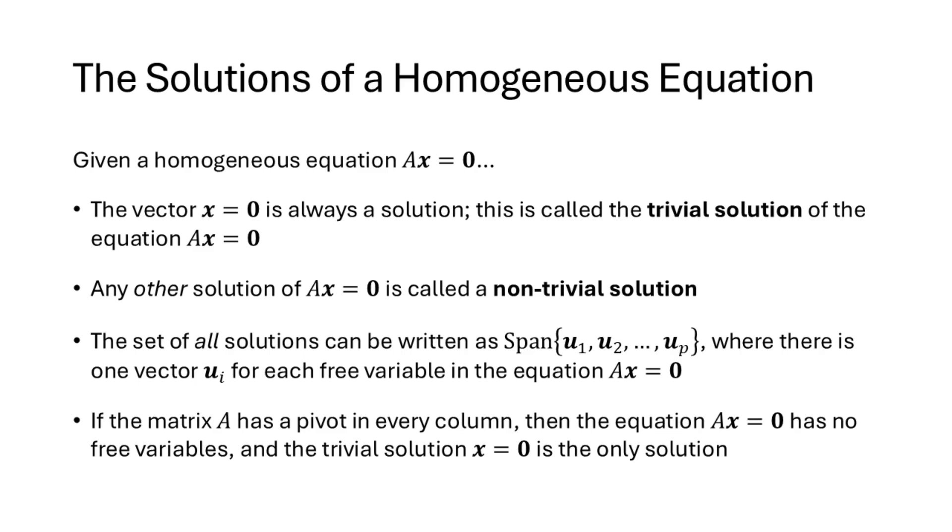As we've seen, when we write our solution in parametric vector form, the solution set can always be written as the span of one or more vectors, and the number of vectors generating that span is the number of free variables in the equation Ax equals zero. If we don't have any free variables, then the only solution is the trivial solution. The only solution is x equals zero.